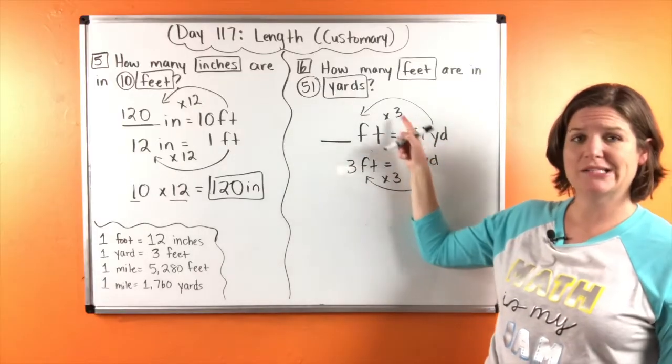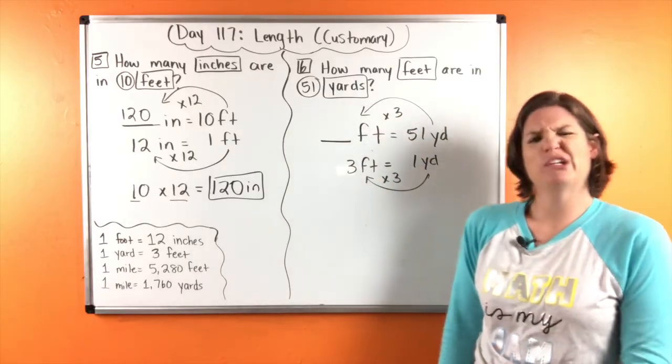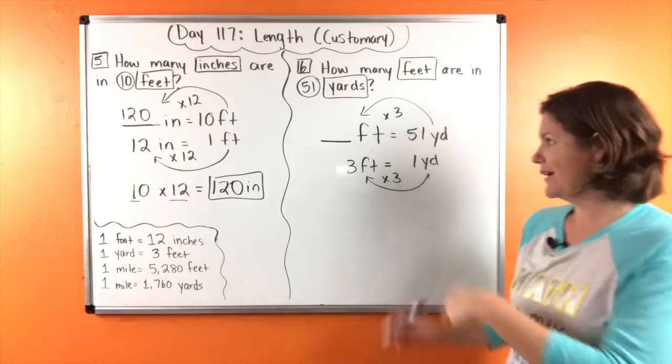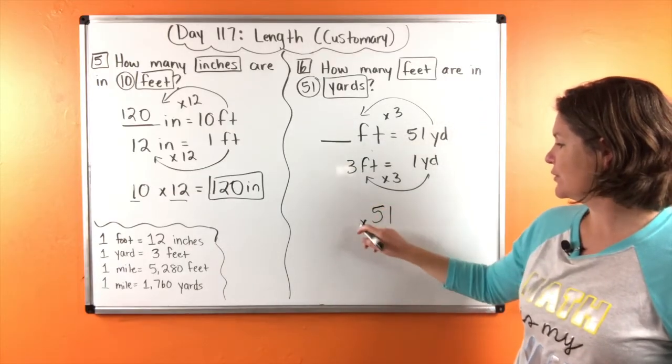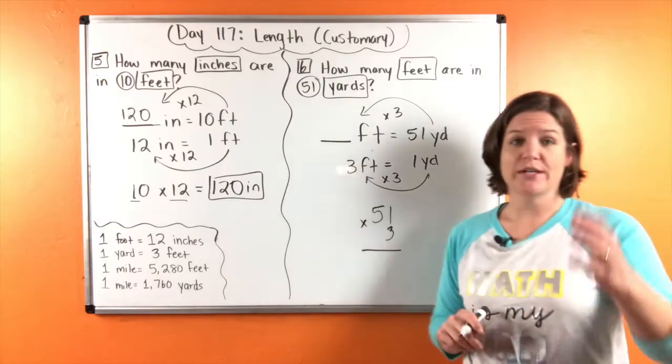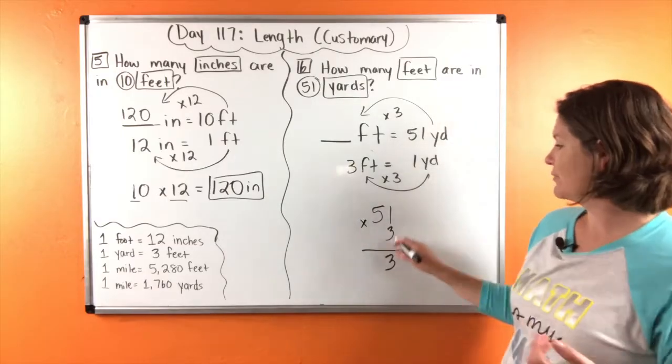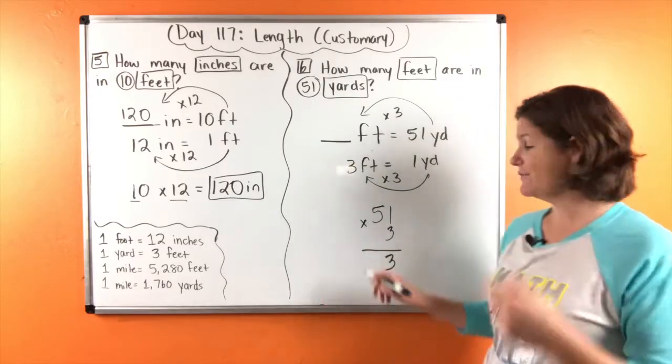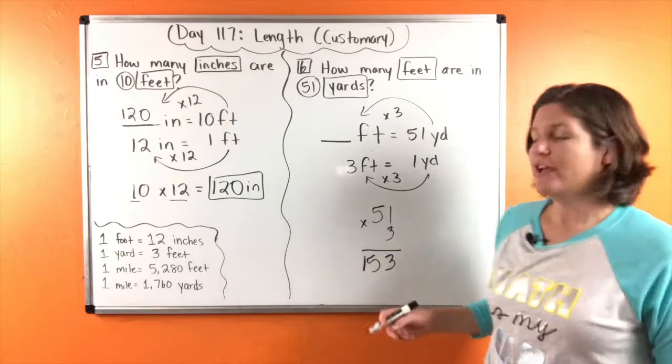So now we have 51 times three. And how do I do that? Oh, I can bring it down here and multiply, which you should have done. So you can help me out. Three times one is three. Three times five is 15. So we have 153.